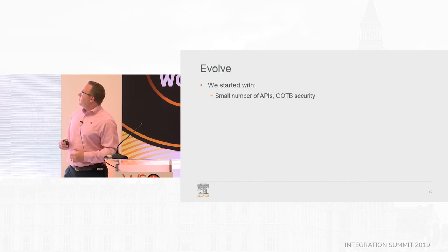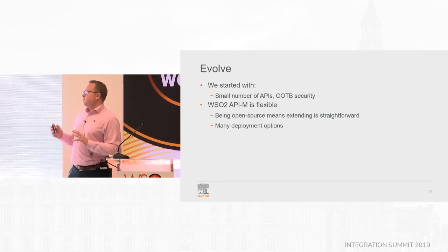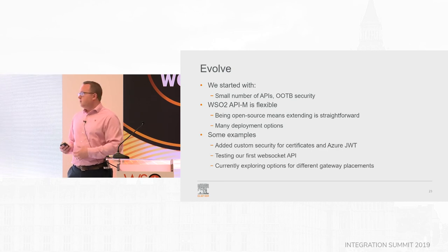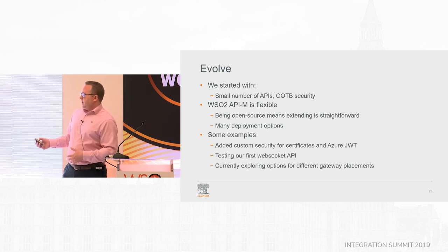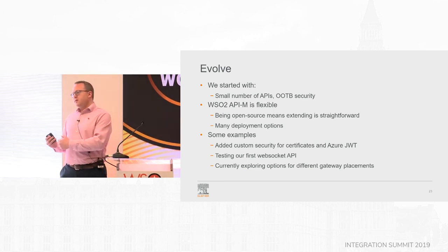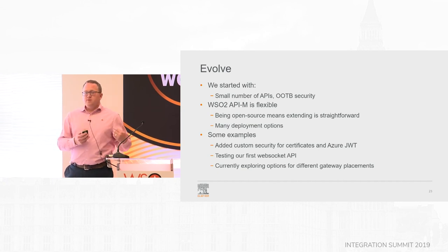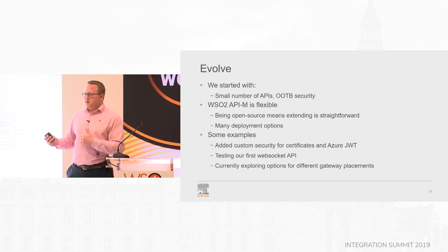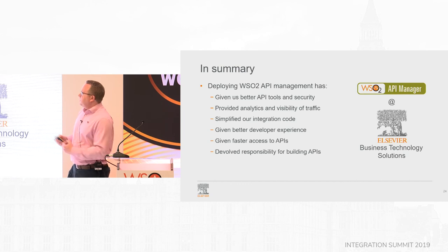Fifth lesson: you don't have to do everything at once. WSO2 API Manager is very flexible — you can deploy it all in one or in many different ways. We started with a small number of APIs and out-of-the-box security, then added custom security handlers based on the open source code. There are new features like WebSockets for more dynamic conversations. The next thing for us is putting internal gateways to segment APIs and their availability, rather than just public endpoints. It's helped us with a lot of things.